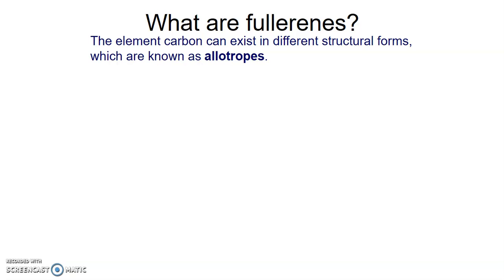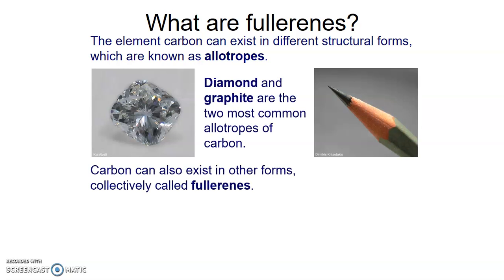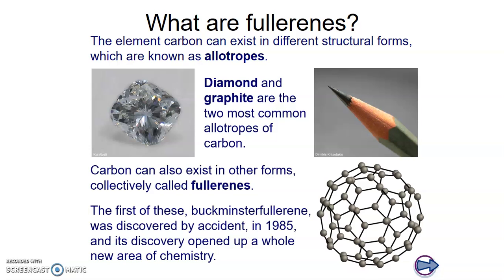Fullerenes are one type of carbon allotrope. We looked at diamond and graphite - we don't need to discuss those again. A fullerene is just a hollow form of a carbon allotrope. The first fullerene was discovered by accident in 1985 and it was called buckminster fullerene. It has a spherical or ball structure and is sometimes called bucky balls. Its discovery opened up a whole new area of chemistry looking at these types of structures that we find carbon in.